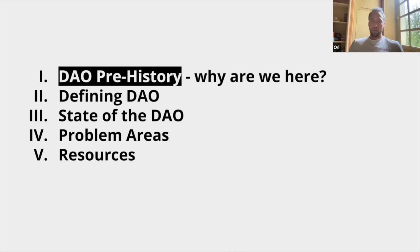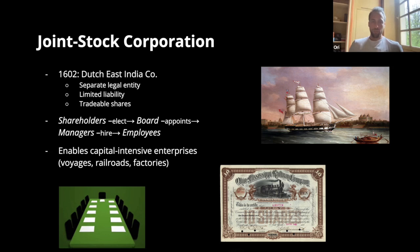We wanted to start off talking about the dominant way that humans coordinate today in the global economy. The first modern corporation is considered to be the Dutch East India Company because it had three key features: a separate legal personality, so instead of interfacing with 500 shareholders, you're actually just interfacing with one legal entity. In addition to this, liability of all the participants is limited to the money that they put into the enterprise — they can't be sued personally for more than that.